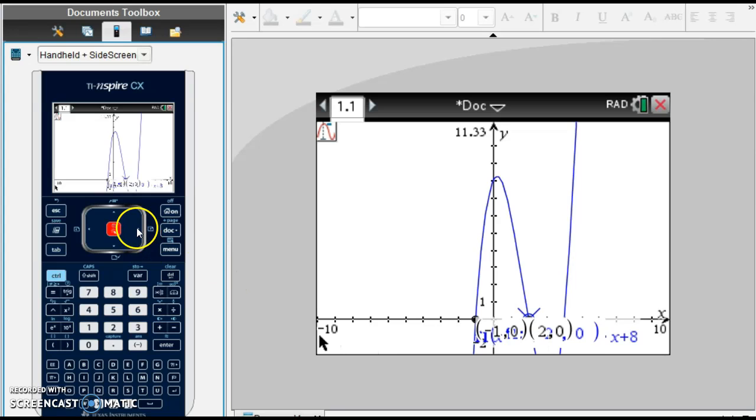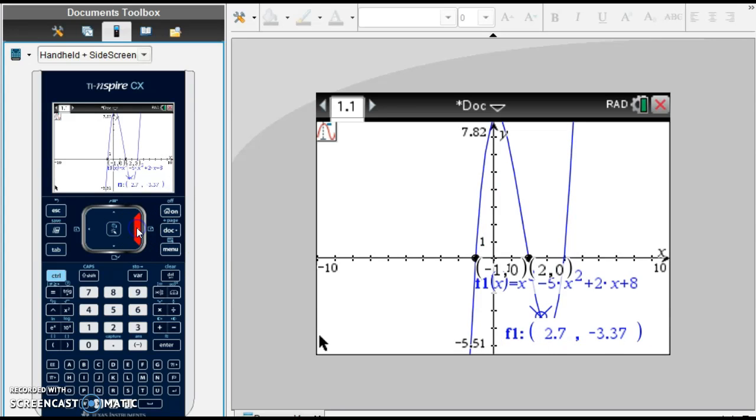I know it crosses one more time, so I'm going to keep going. There's a minimum underneath there. And I come up the other side and there is my third zero. Click to lock. And my third zero is at x equals 4.